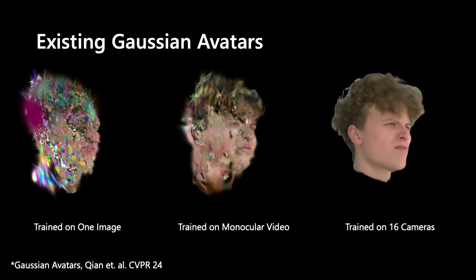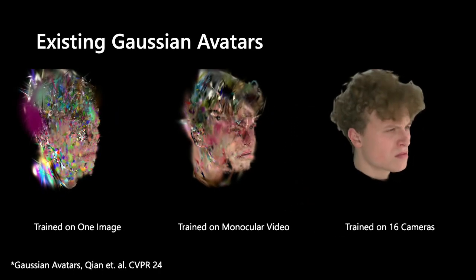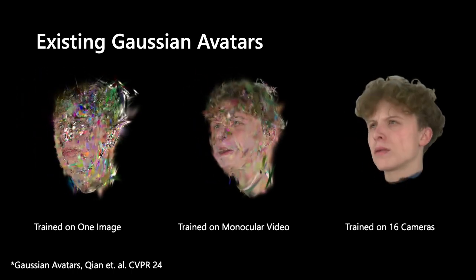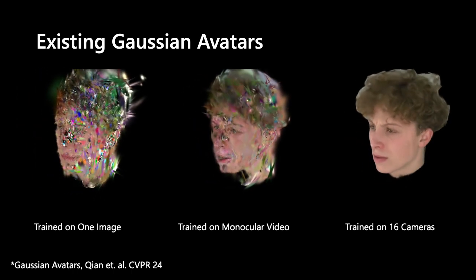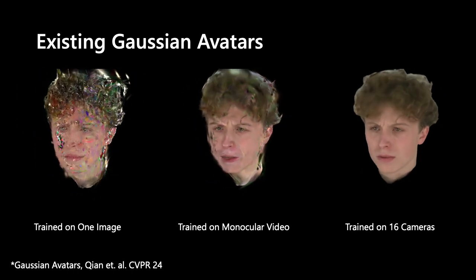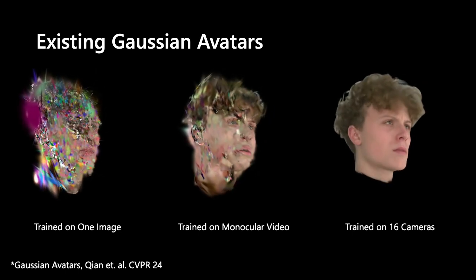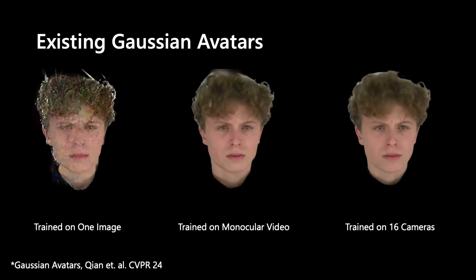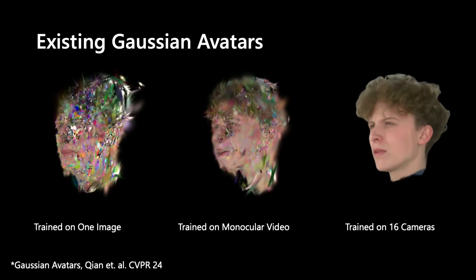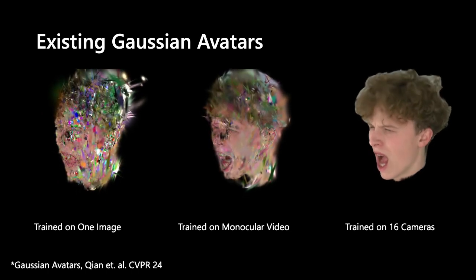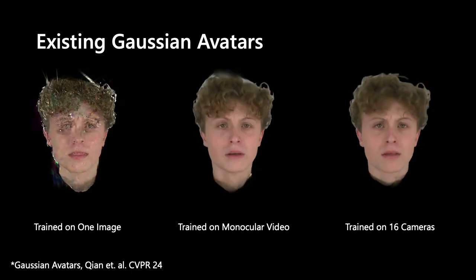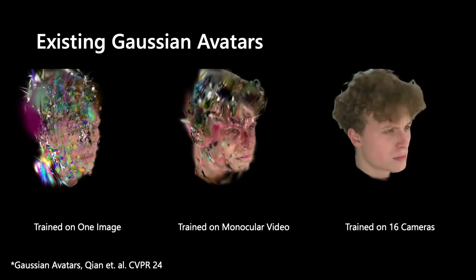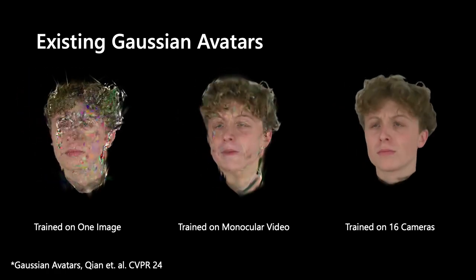Several recent avatar models have been based on Gaussian splatting. While these Gaussian avatars can produce very high-quality results when trained using multiple cameras, such setups are not available to an average user. An ideal model should be able to be trained using only a single camera. Existing Gaussian avatar methods suffer from poor novel view synthesis when trained using only a single camera, as shown here.